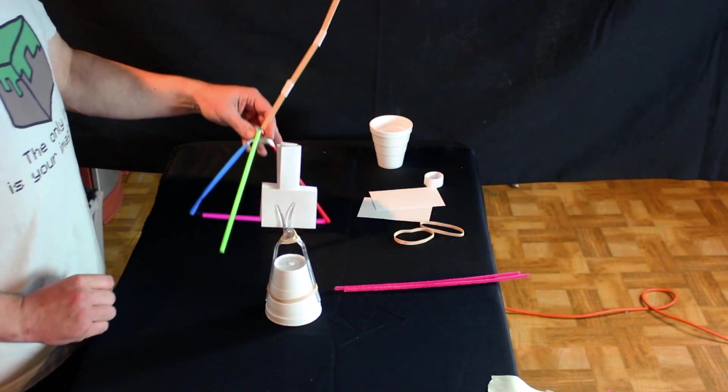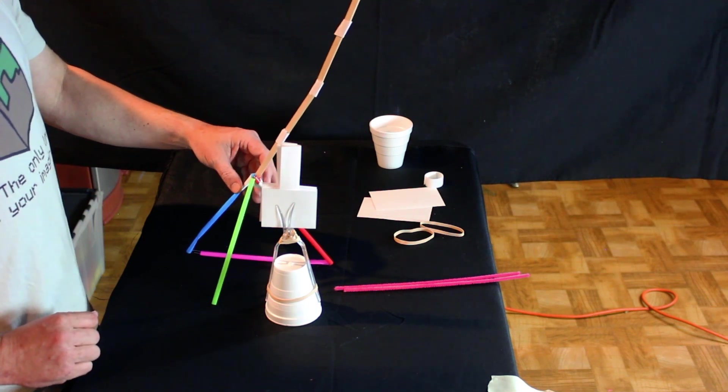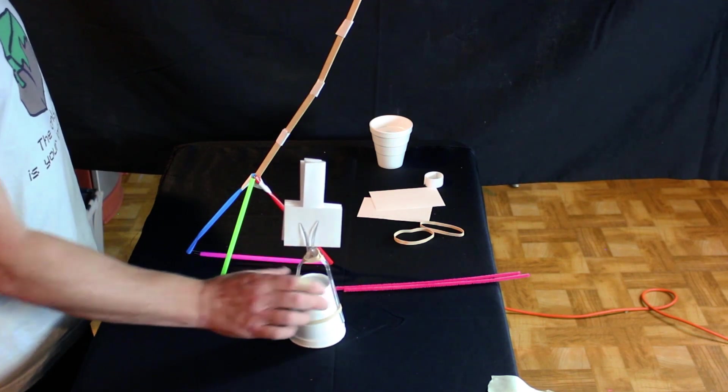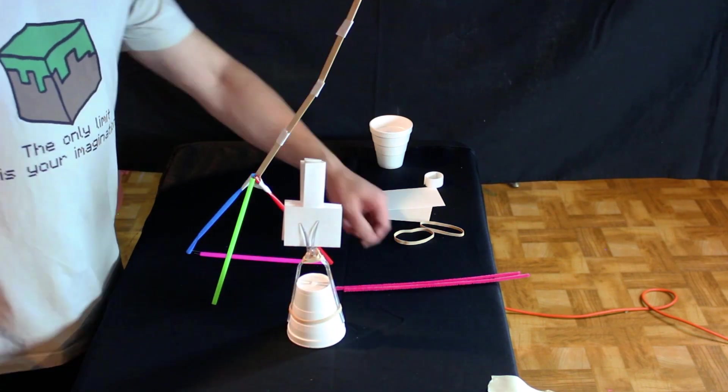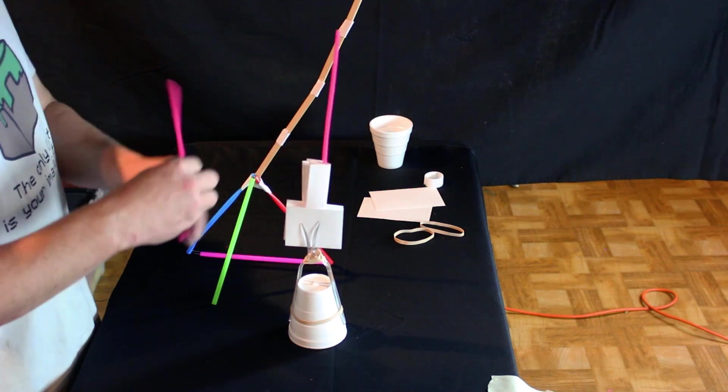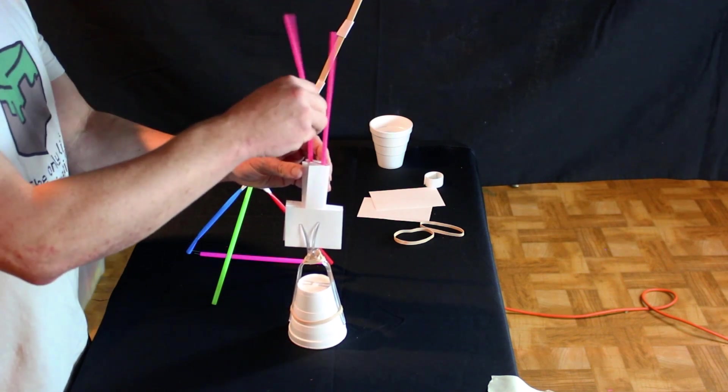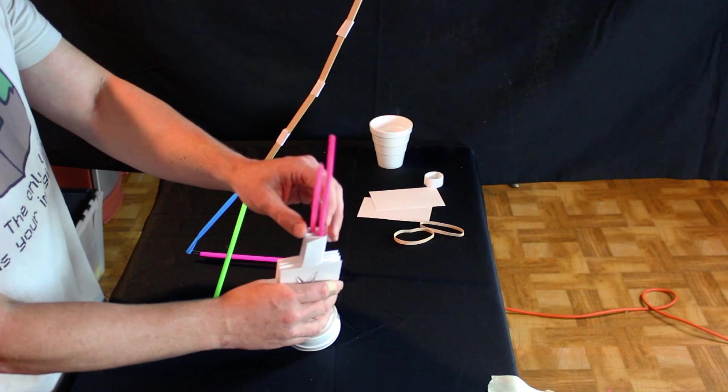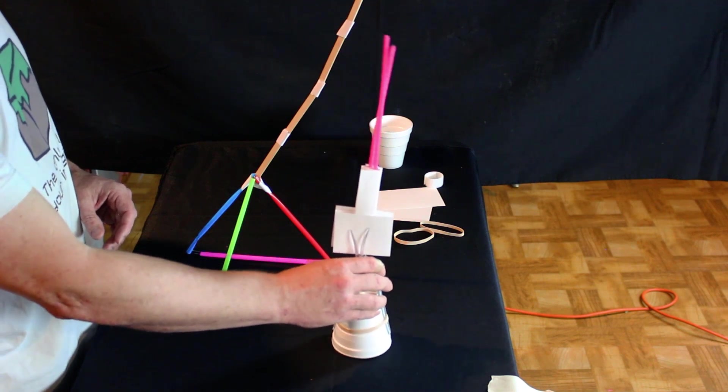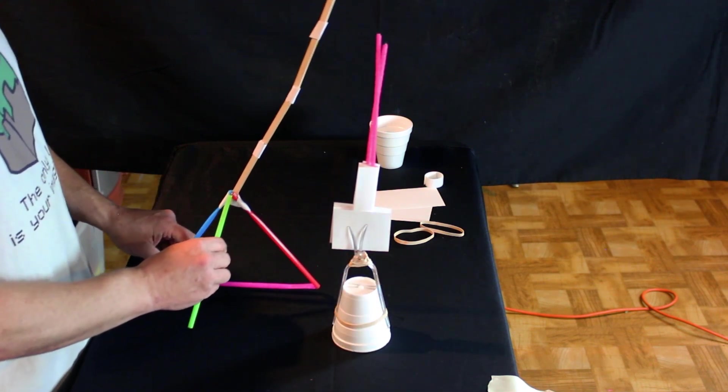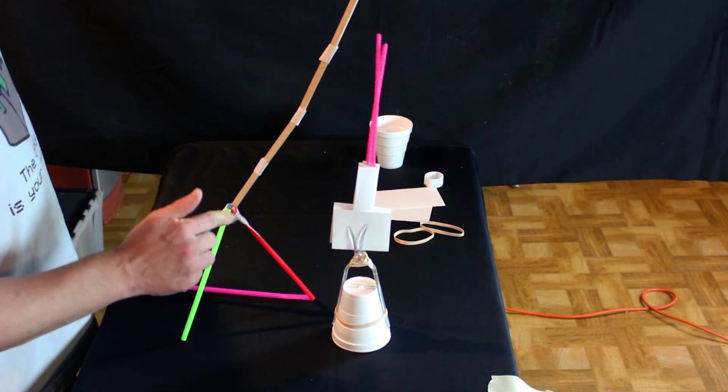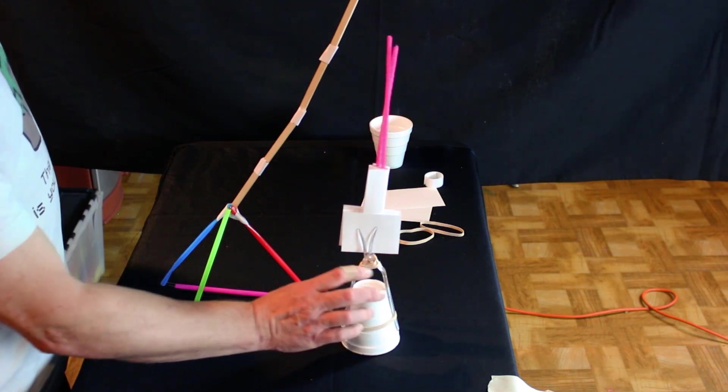However, as we see, it doesn't quite match the height of that tower. So our score would only be how tall this tower is. Let's make this tower a little higher. We should be able to do that fairly easily by just taking these pipe cleaners and just slide them right into that paper that we folded. Not bad, huh? How does that match up to our other tower? As we can see, our first tower is still a little taller, which isn't bad. This is still a good height.